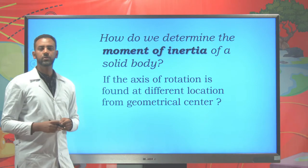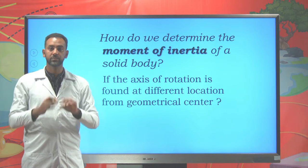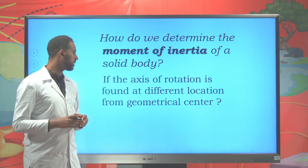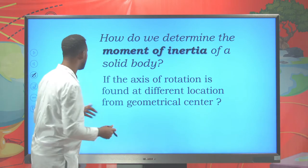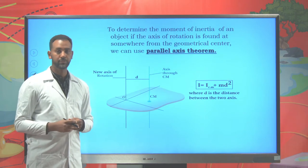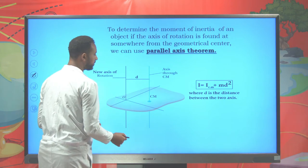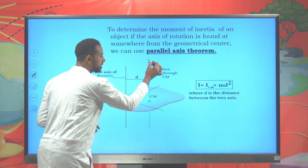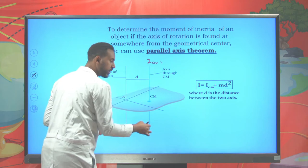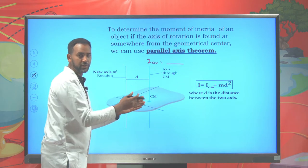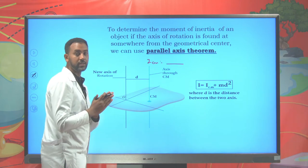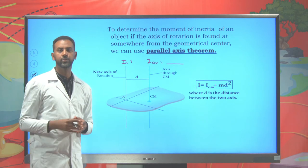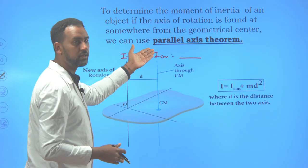Another question is: what if the axis of rotation is different from the center? Suppose you have a rigid body and the axis is found at a different location than the center. Then to find this, you should use a famous technique called the parallel axis theorem. We can apply this to find the moment of inertia. As the axis is through the center, it's possible to find the moment of inertia in standard physics books for different solid bodies. Now the question is, what if you have another axis?